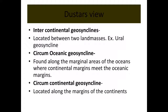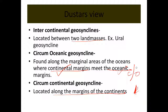Duster's view is based on the location of geosynclines. The first type is intercontinental geosynclines, located between two landmasses — example: the Ural geosynclines. Circum-oceanic geosynclines are found along the marginal areas of oceans where continental margins meet oceanic margins. Circum-continental geosynclines are located along the margins of the continents, where the continental margin borders the oceanic margin.